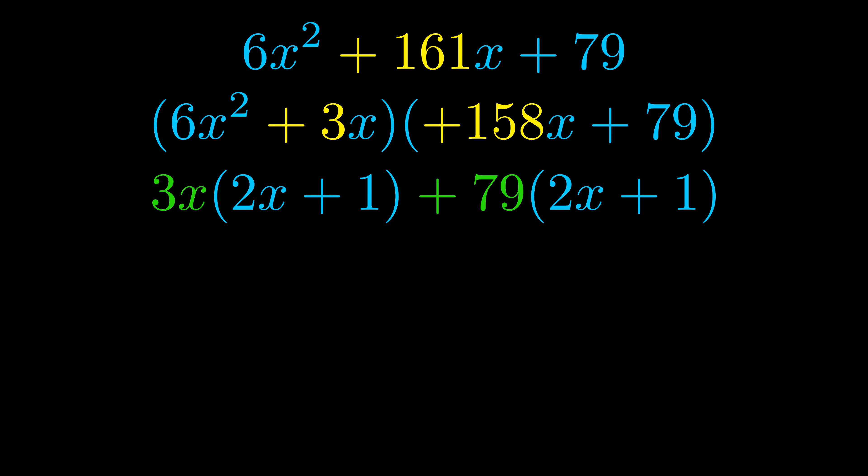Notice also how what remains inside of the parentheses is the same in both cases. The blue values are the same. Those blue values will become one of our factors and we will combine the two green values, the GCFs that we pulled out, to get the other one. And that is our fully factored equation.